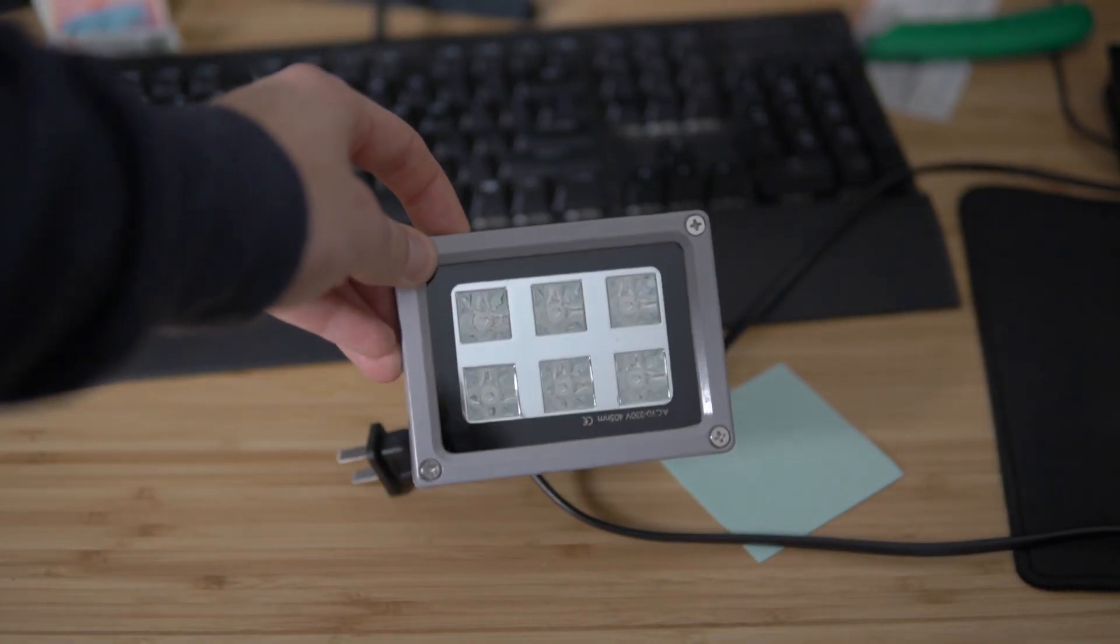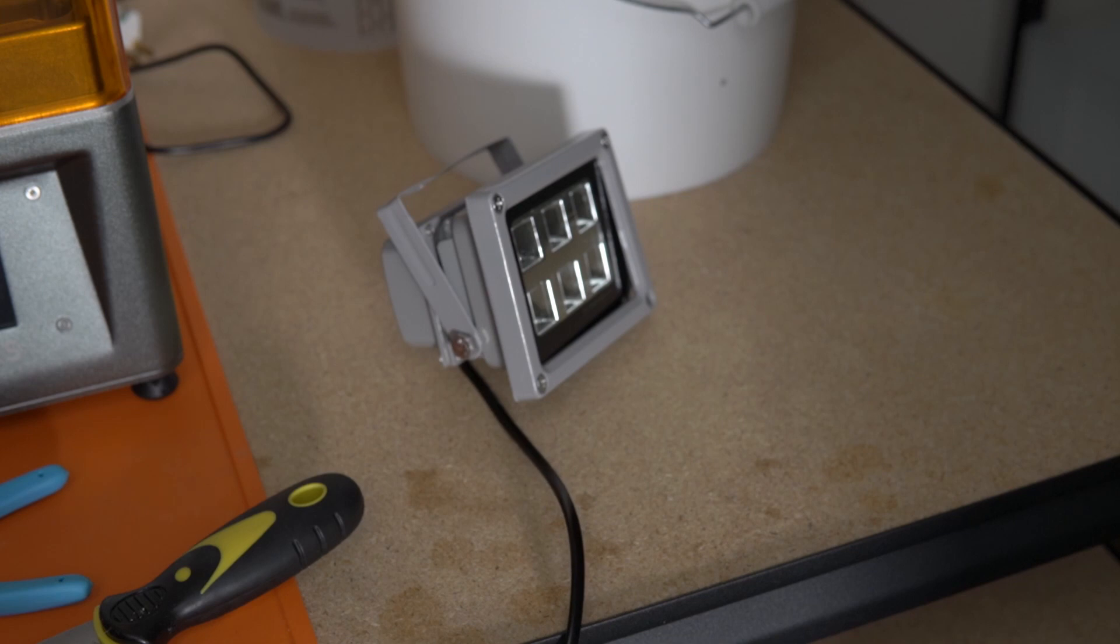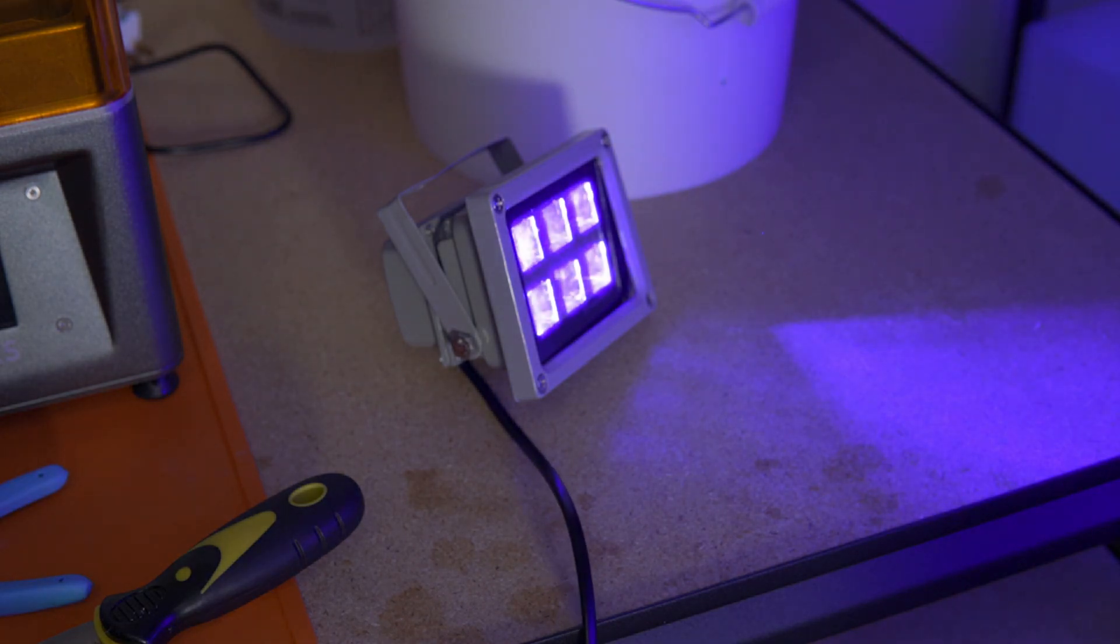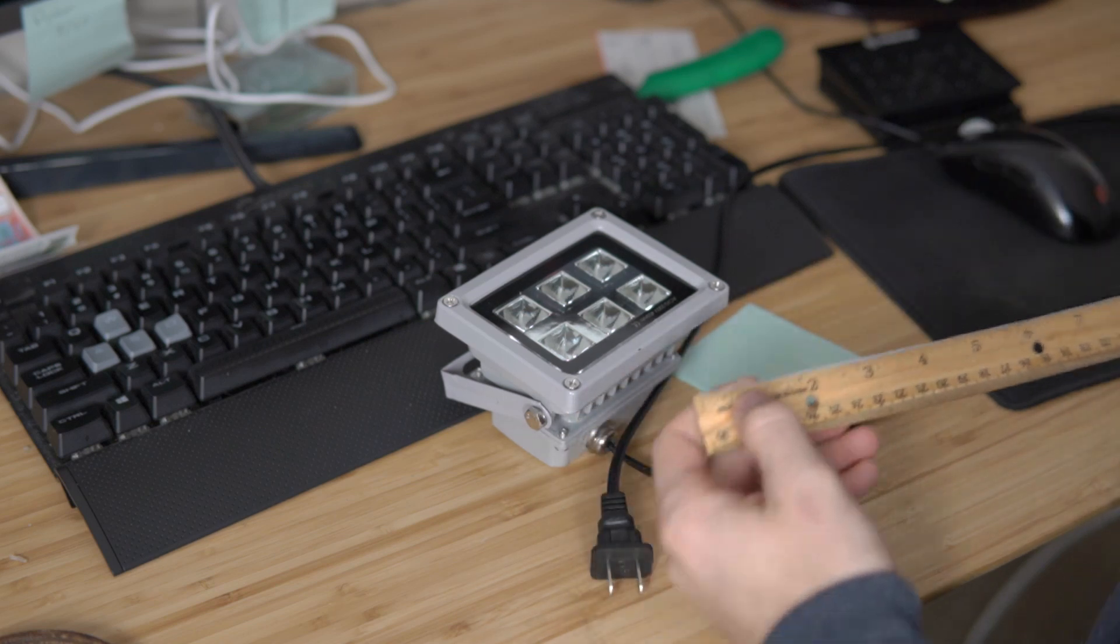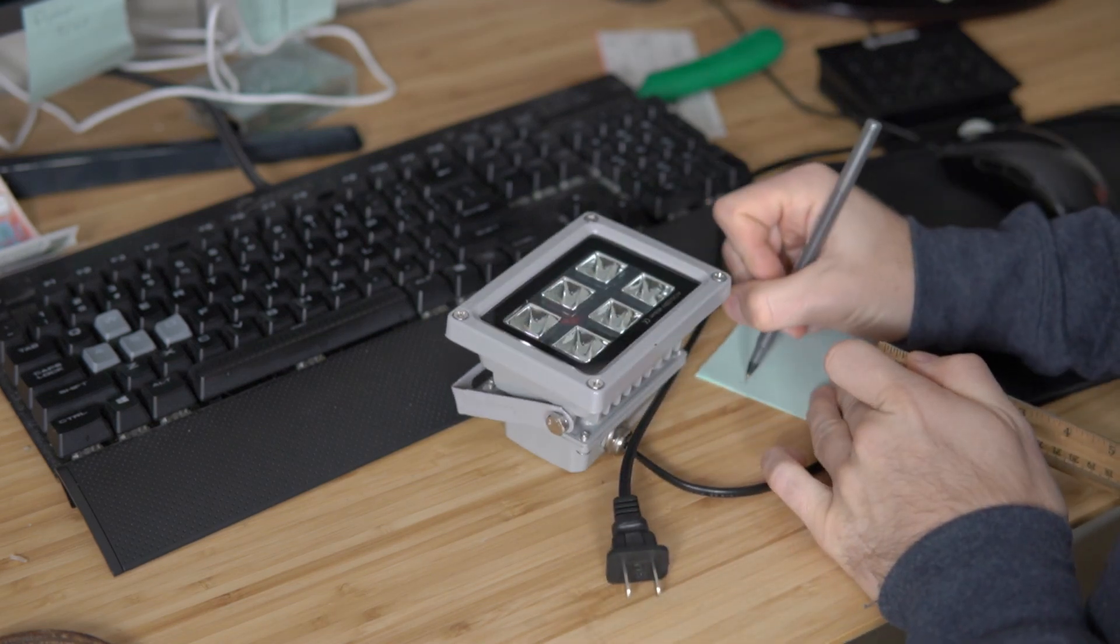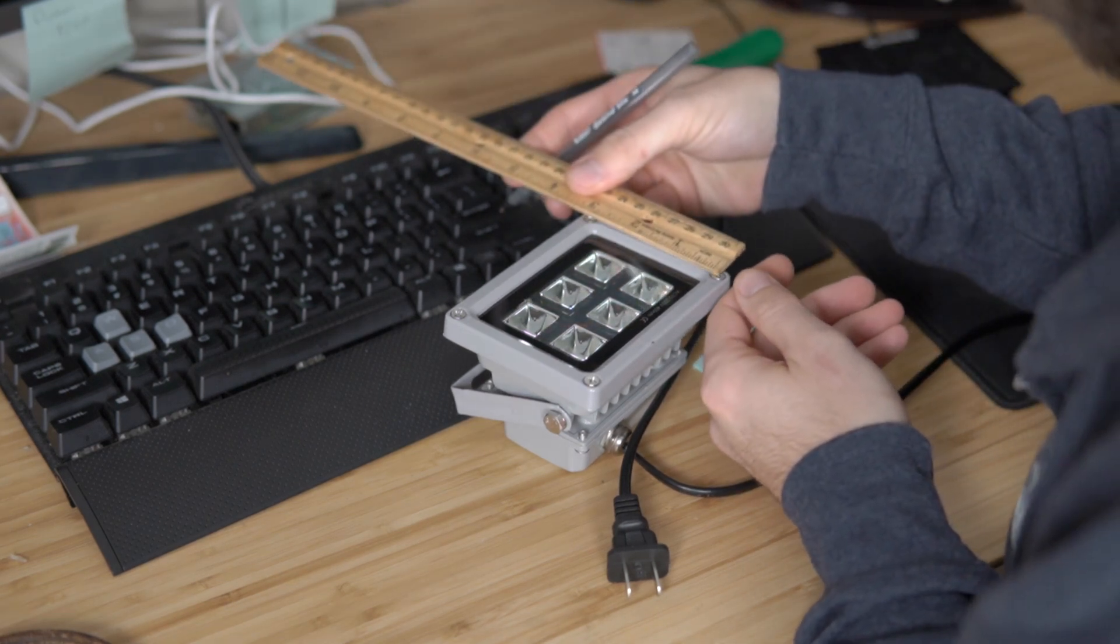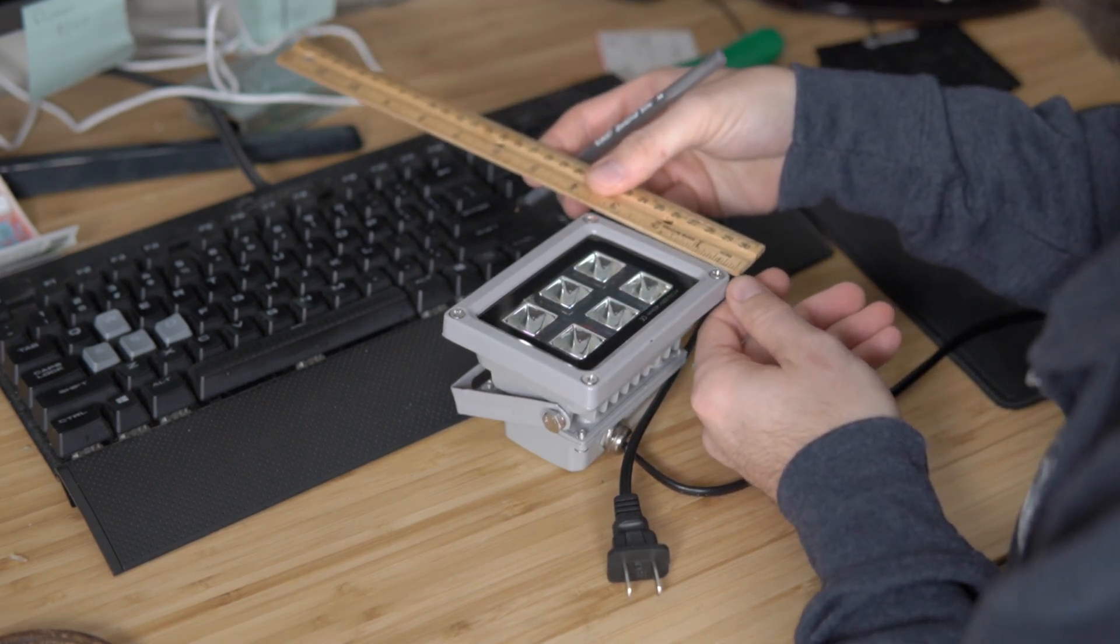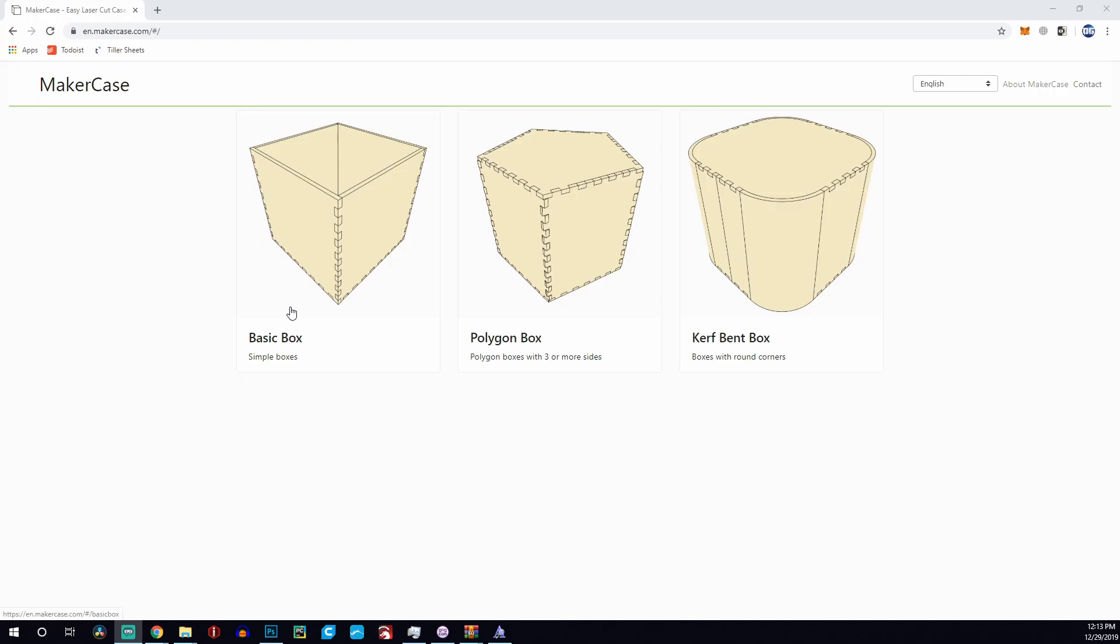This is the light that I got. It was just roughly, I think, $25 on Amazon. And as you can see, there's a little switch, and when you flip it on, it shines the UV light. So the first thing I did was just go ahead and measured the length and the width of the total body of the light, as well as the portion that actually contained the light, so that way I knew what section I wanted to cut out.